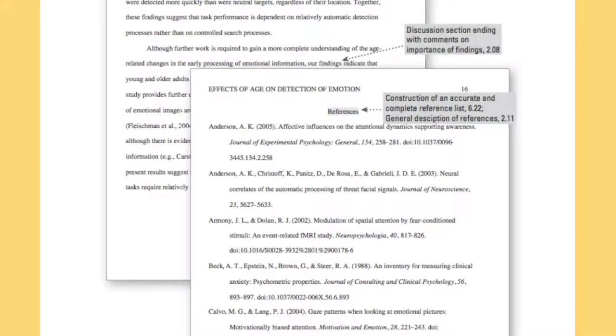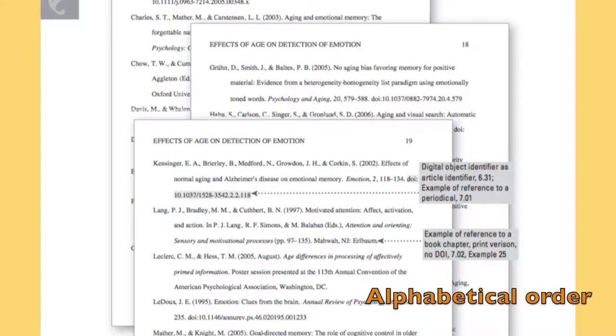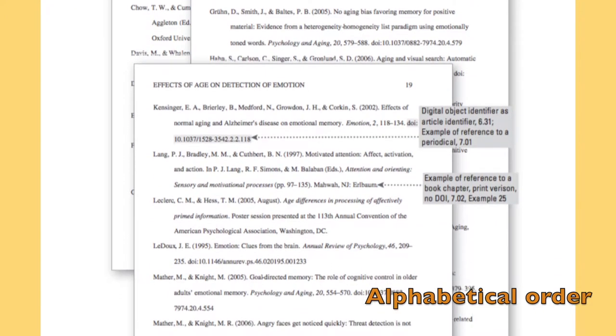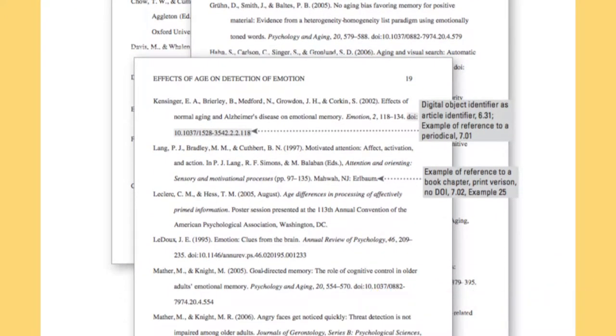Note here that we have references centered at the top of the page. Each citation has a hanging indentation, which is the indentation of the second and all subsequent lines of each citation. Also, it's important to note that all of your citations are going to be in alphabetical order. For a more detailed description of citing, consult chapter six of your APA manual.